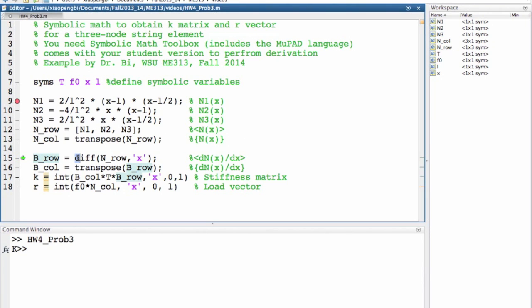Take first derivative with respect to x to find dN/dx in row form. Transpose to get column dN/dx.